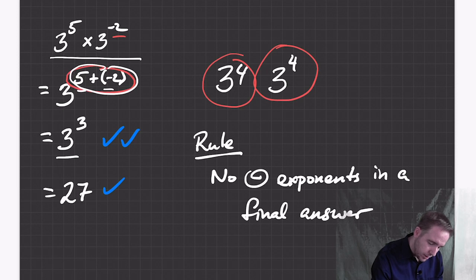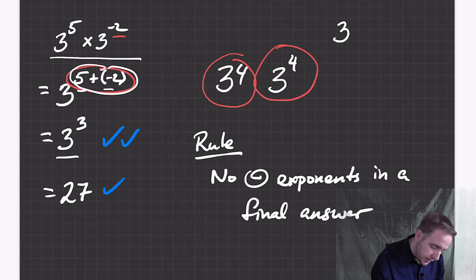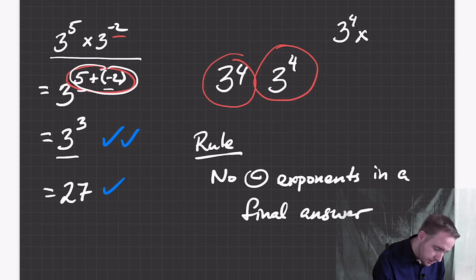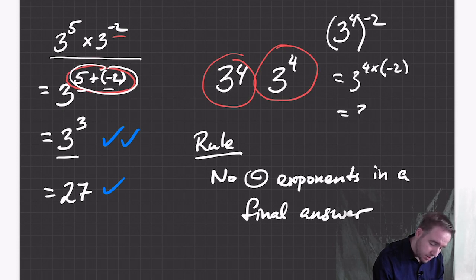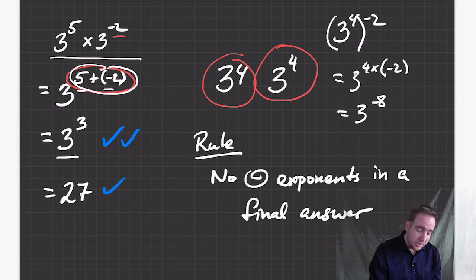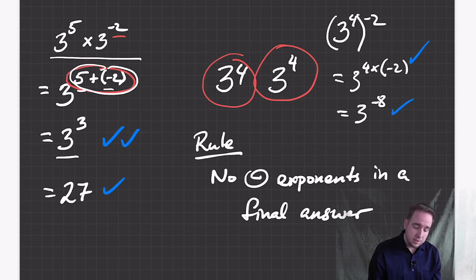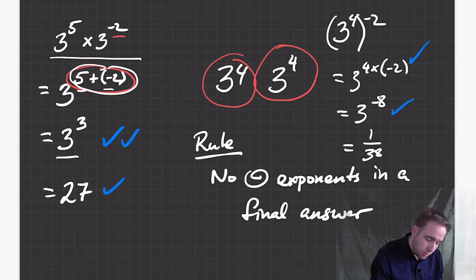So if you had a question like three to the four to the negative two, that's the rule where you multiply the exponents together: three to the four times negative two, which is three to the negative eight. Yes, you used the rule correctly, but you need to go a step further — you need an answer where there are no negative numbers in the exponents. So one over three to the eight is the correct final answer.